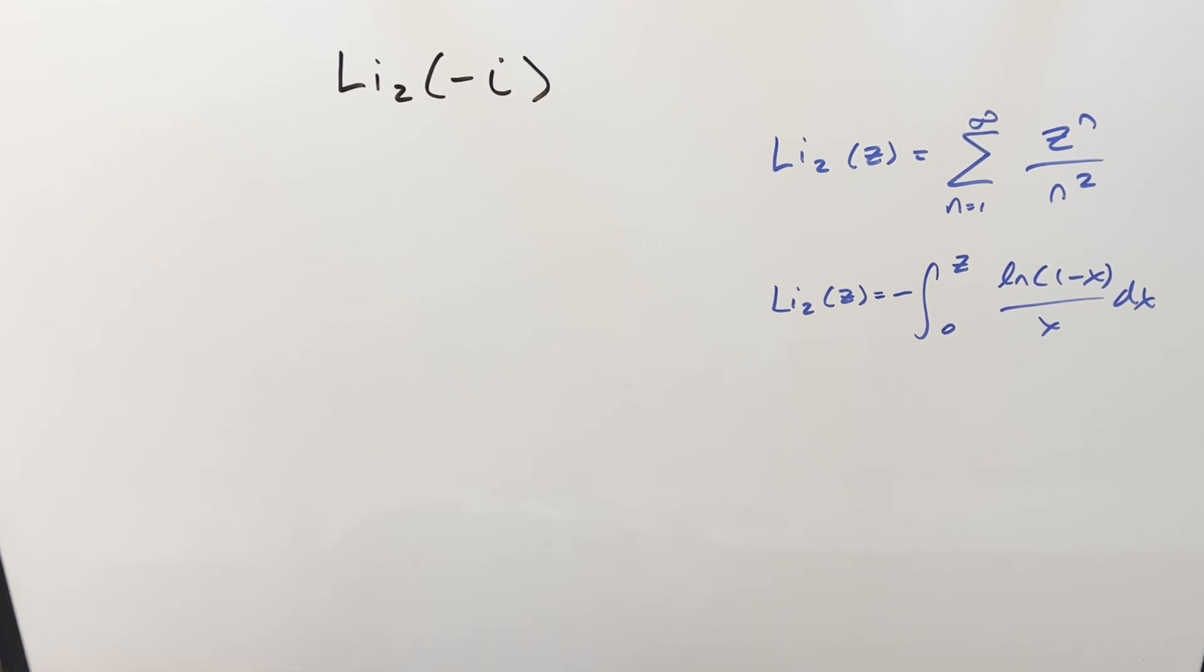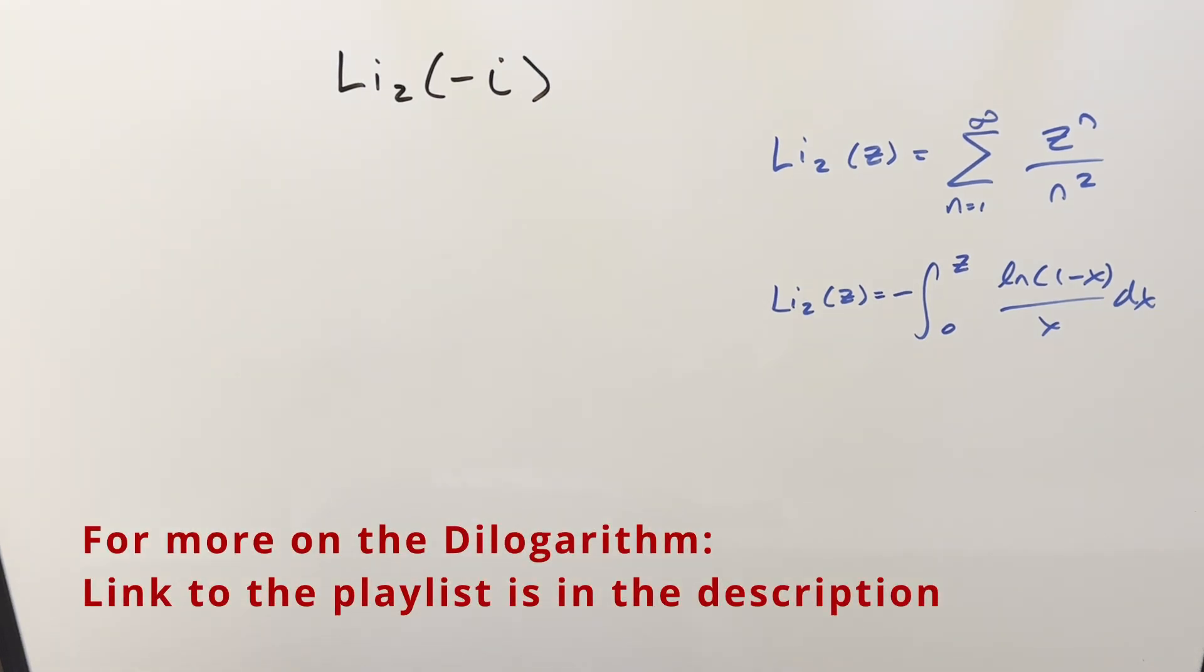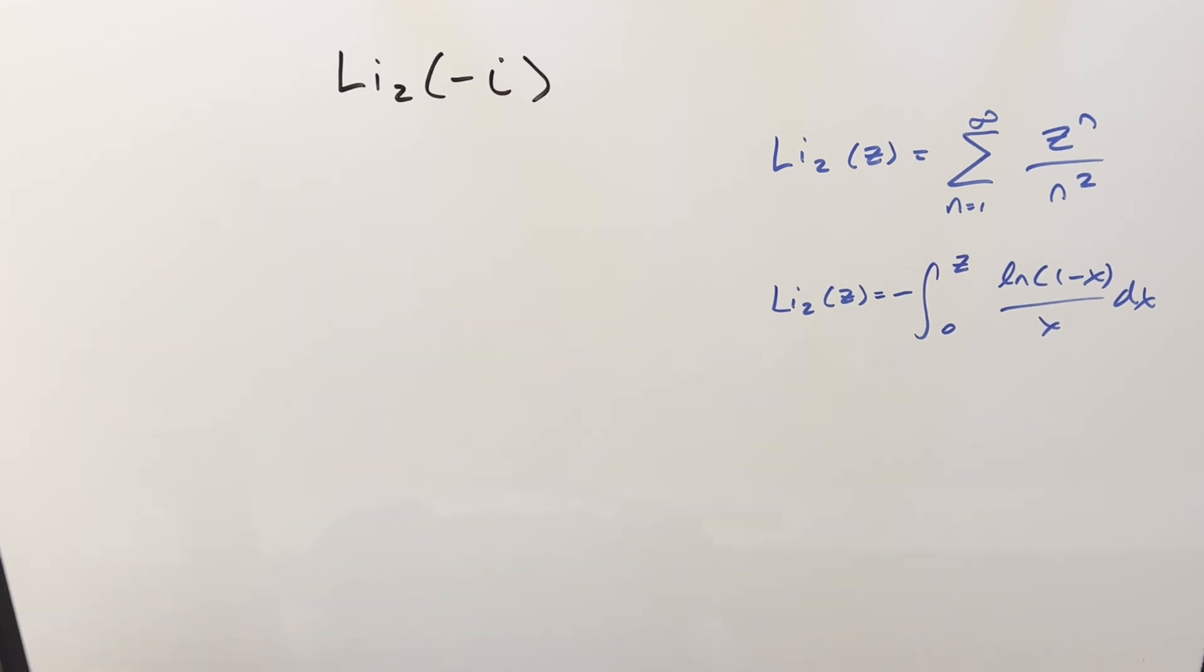So it's been a while since I did any problems on the dilogarithm, and today I thought I'd revisit it and look at a problem: the dilogarithm of minus i. This is really similar to a series problem I did a while back where we ended up with the dilogarithm of just i.